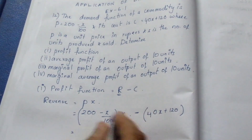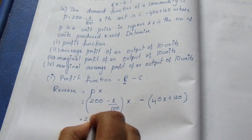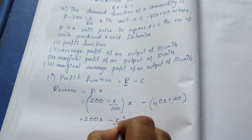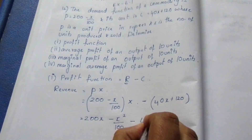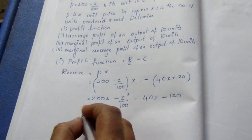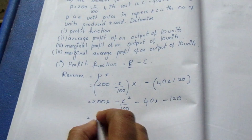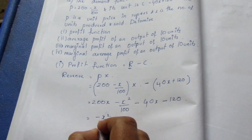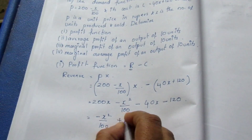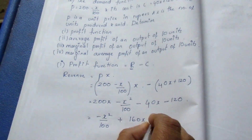Multiplying out: 200x minus x squared by 100, minus 40x minus 120. Collecting like terms, the x squared term is minus x squared by 100, and the x terms give plus 160x, minus 120. So the profit function is minus x squared by 100 plus 160x minus 120.